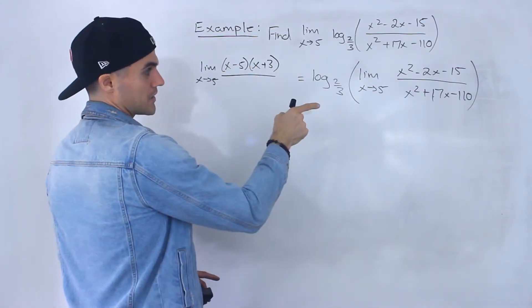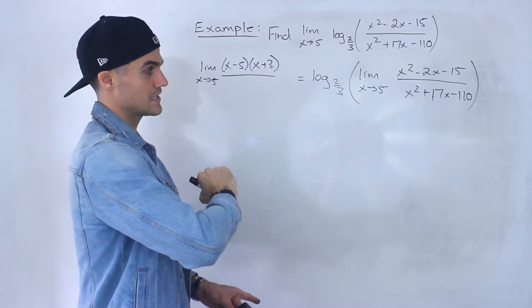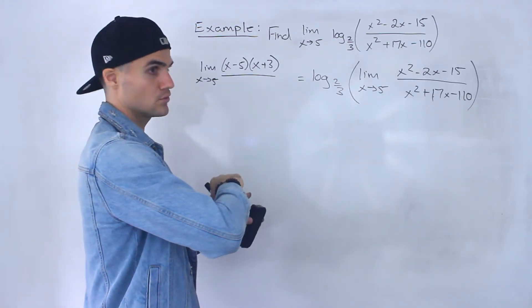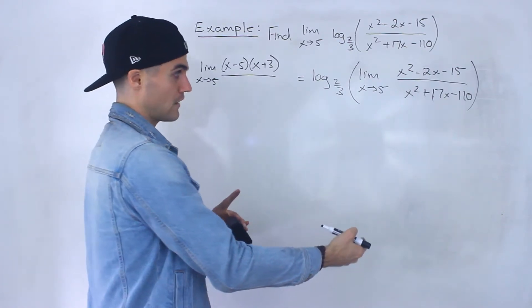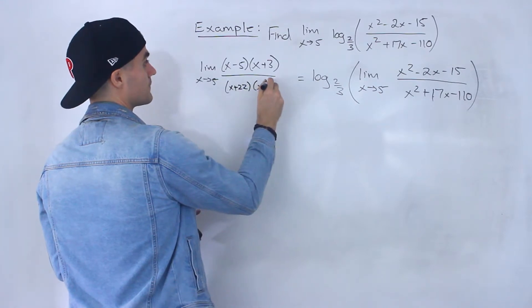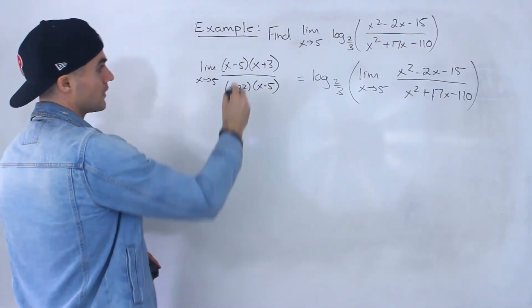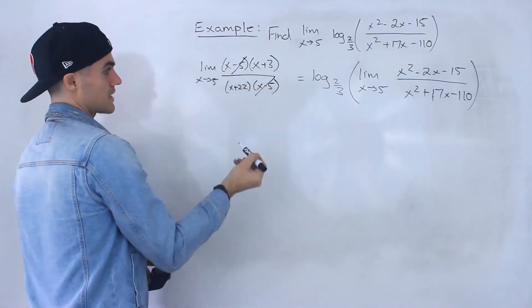And if I factor the denominator, two numbers that multiply to negative 110 add up to 17, that would be positive 22 and negative 5. So that would be x plus 22, x minus 5 like that. And then from here, notice those cancel out.